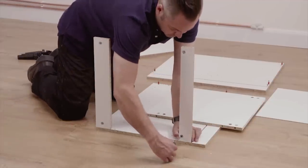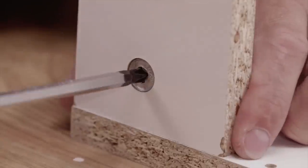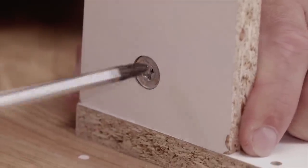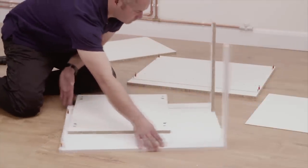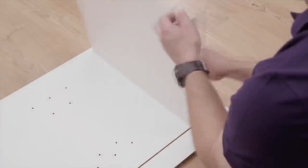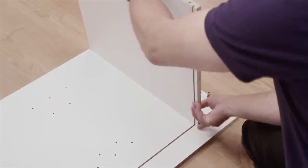Now, secure all the cam locks using a screwdriver. Firmly turn them clockwise until they are locked. Be careful not to over-tighten. Then, place the bottom panel in. Make sure the grooves in the base and side panel line up too.